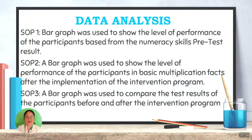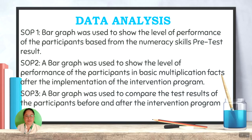Data Analysis: For SOP 1, a bar graph was used to show the level of performance of the participants based on the numeracy scales pretest result. For SOP 2, a bar graph was used to show the level of performance after the implementation of the intervention program. For SOP 3, a bar graph was used to compare the test results of the participants before and after the intervention program.